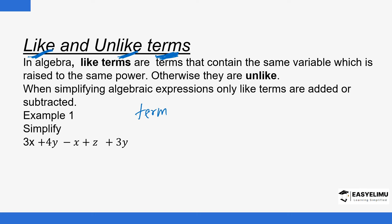We want to see how you know whether terms are like or unlike. Terms are considered like if they meet two conditions: one, they must contain the same variables; and two, the variables must be raised to the same power. Both conditions must be met for terms to be considered like. For example, x and 2x are like terms because they have the same variable x, and x is raised to power 1 in both cases.